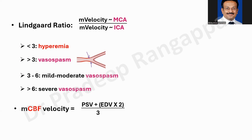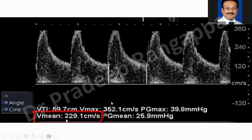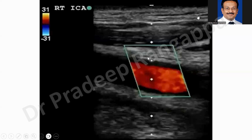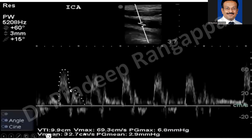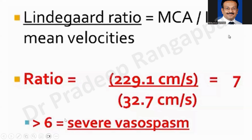This is instrument-specific, so be aware of what machine you are using. On a Mindray, for example, it gives mean velocity directly. Here you can see the middle cerebral artery mean velocity and the internal carotid artery — increase the gate size for the ICA and it gives direct mean velocity. Calculating the Lindegaard ratio: mean flow of MCA divided by peak velocity of ICA. In this example the ratio was 7, indicating severe vasospasm. Very simple ratio, not complicated at all.